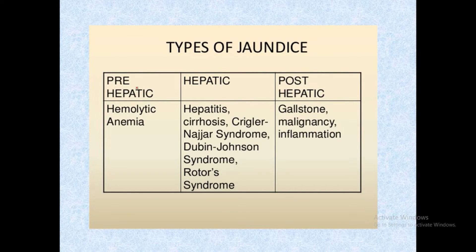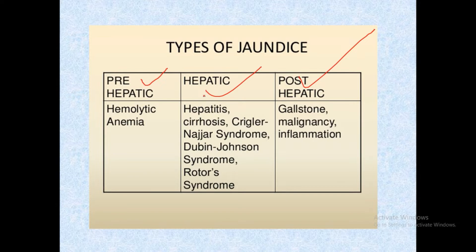The three types of jaundice are: pre-hepatic jaundice (also known as hemolytic jaundice), hepatic jaundice (related to liver cell damage), and post-hepatic jaundice (also known as obstructive jaundice). Causes: pre-hepatic — hemolytic anemia; hepatic — hepatitis, cirrhosis, Crigler-Najjar syndrome, Dubin-Johnson syndrome, and Rotor syndrome; post-hepatic — gallstones, malignancy, or inflammation.